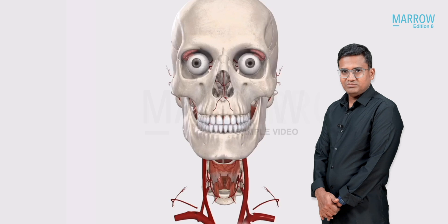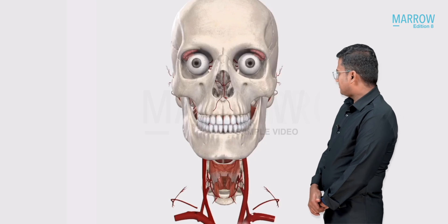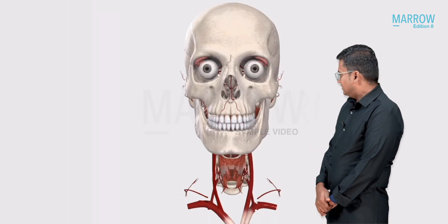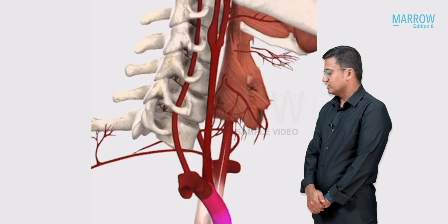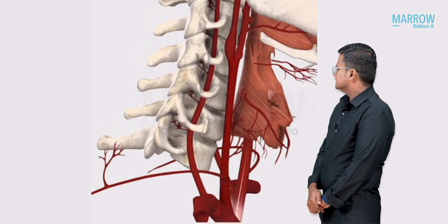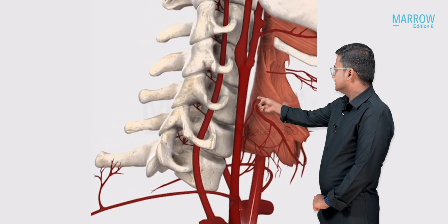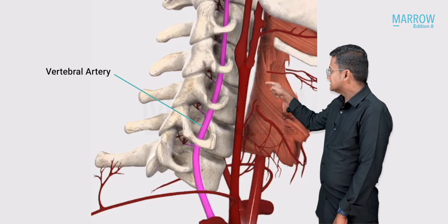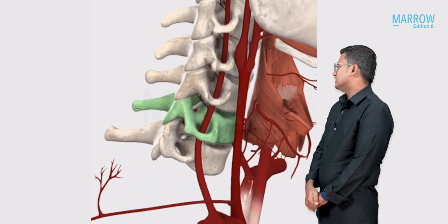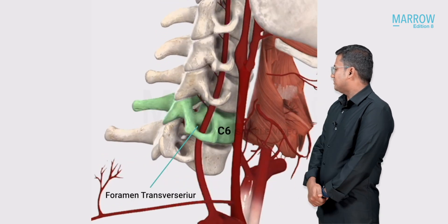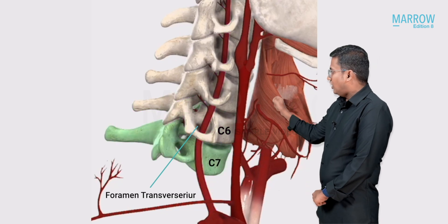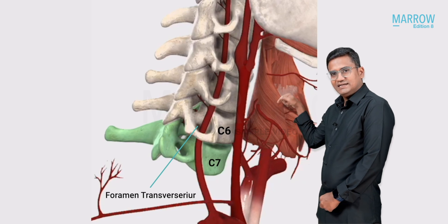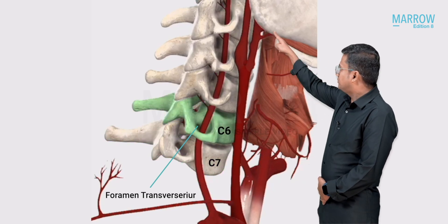Now we are going to see some animations for the blood supply of the brain. The brain is supplied by the carotidobasilar system. The basilar artery comes from the vertebral artery, which is a branch of the subclavian artery. The vertebral artery passes through the foramen transversarium of C6 vertebra up to C1 vertebra. Note that the foramen transversarium of C7 vertebra does not transmit the vertebral artery.